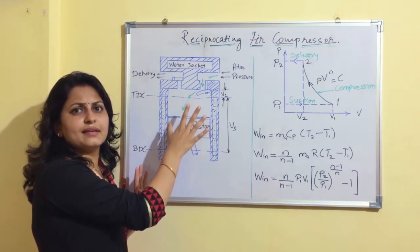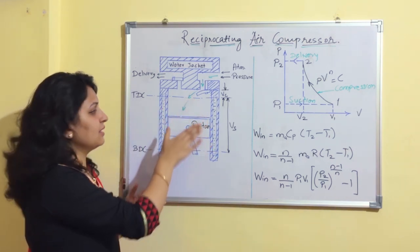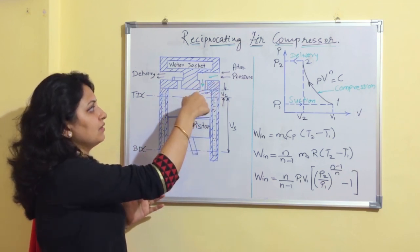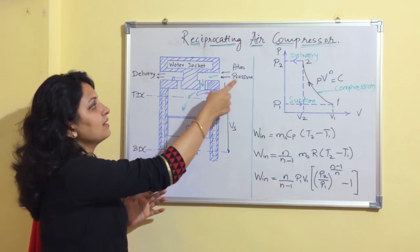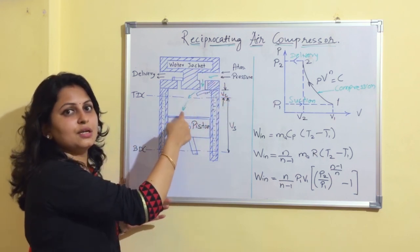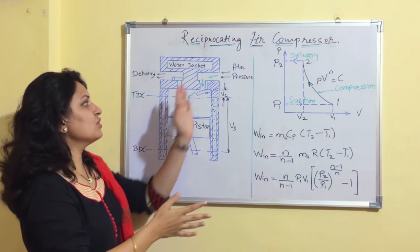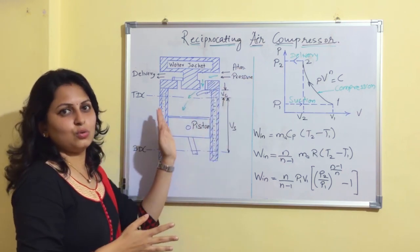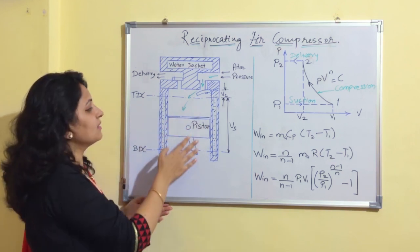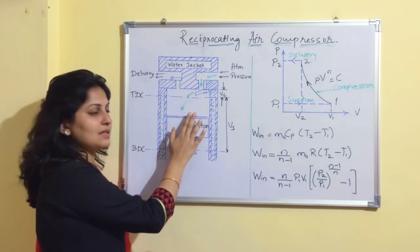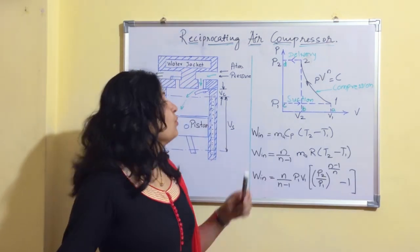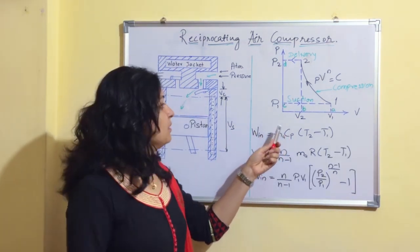As the piston reaches bottom dead center, a vacuum is created in the cylinder, and atmospheric air automatically flows inside due to the property of air which moves from higher pressure to lower pressure. After the piston starts moving towards top dead center, the air present in the cylinder is compressed and delivered to the outlet. In the PV diagram, process C to 1 is the suction process, and process 1 to 2 is polytropic compression.